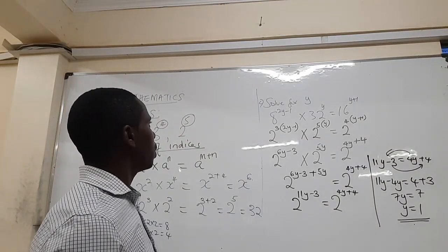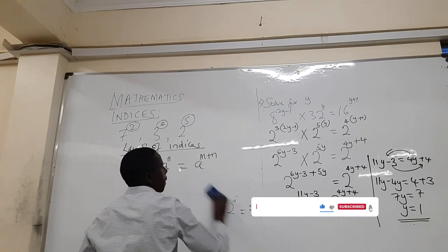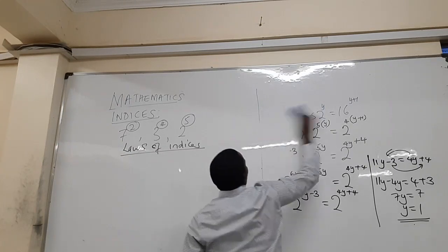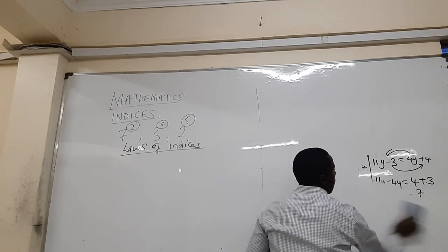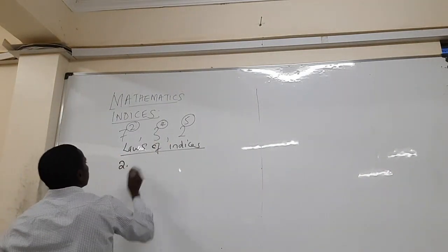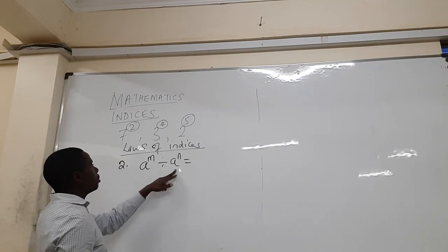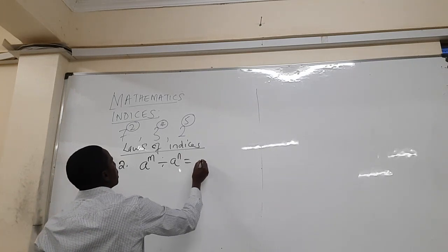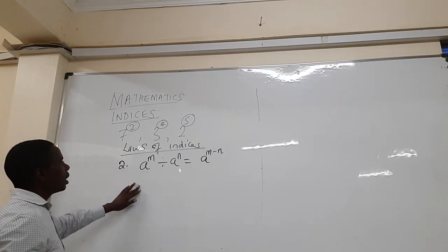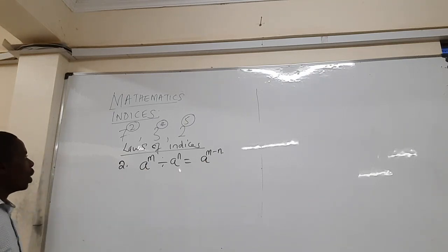Now let's look at the second law, which is the law for division. The second law has the scenario: a to the power m divided by a to the power n. Whenever you are dividing two numbers with the same base, you subtract the powers. So this becomes a to the power m minus n. That is the second law of indices.